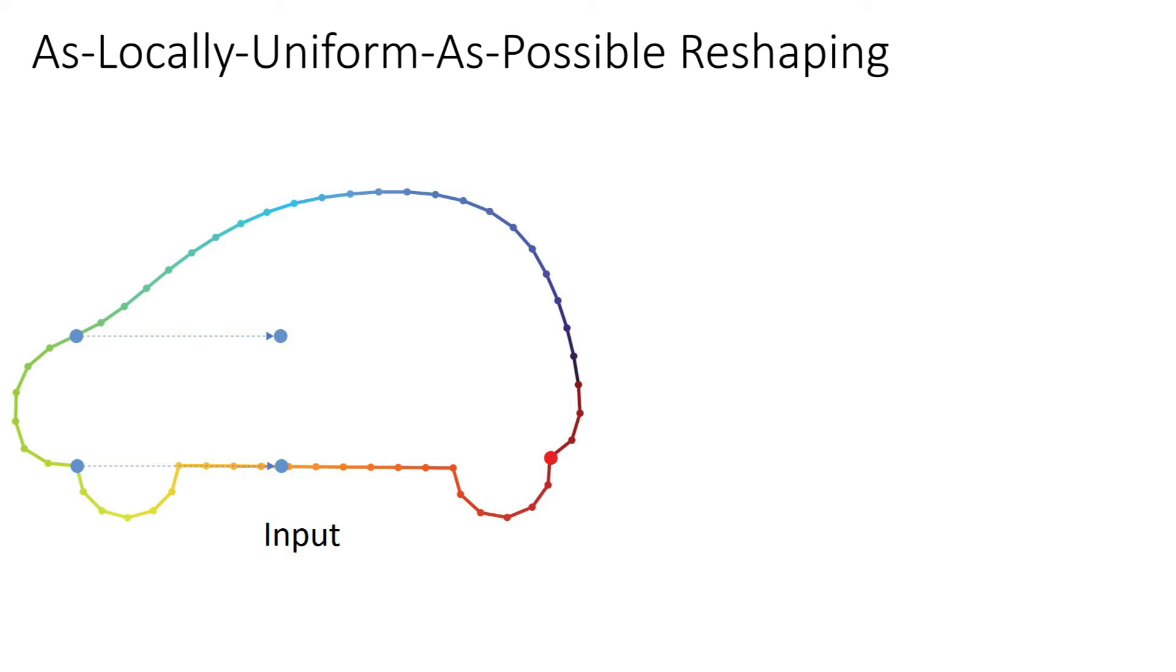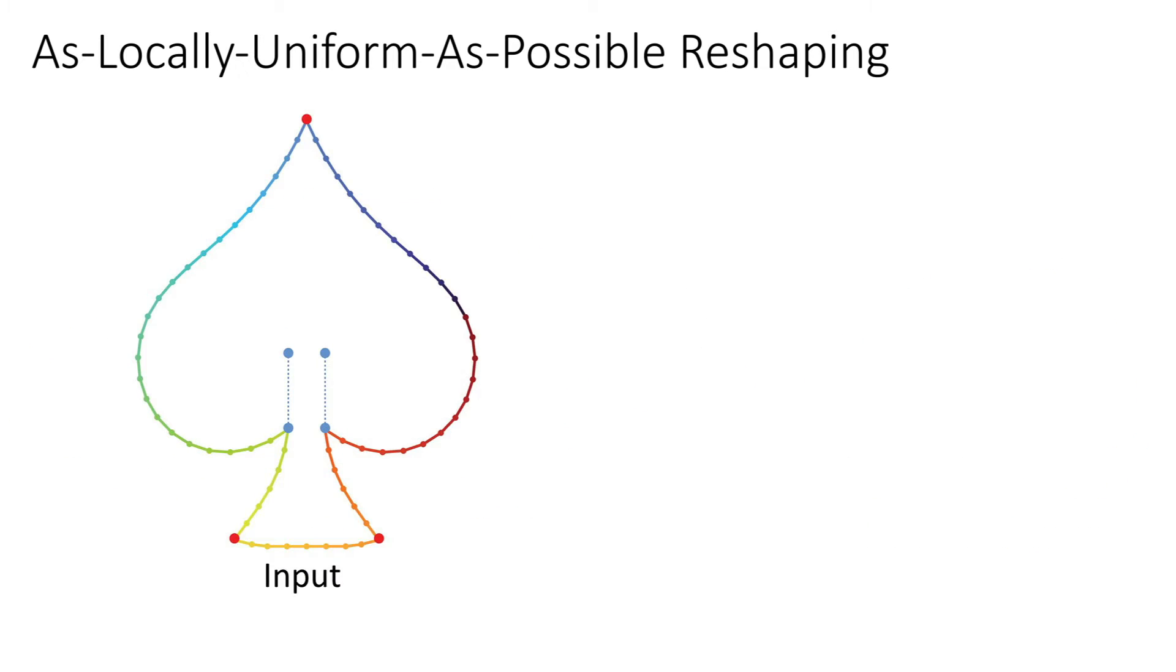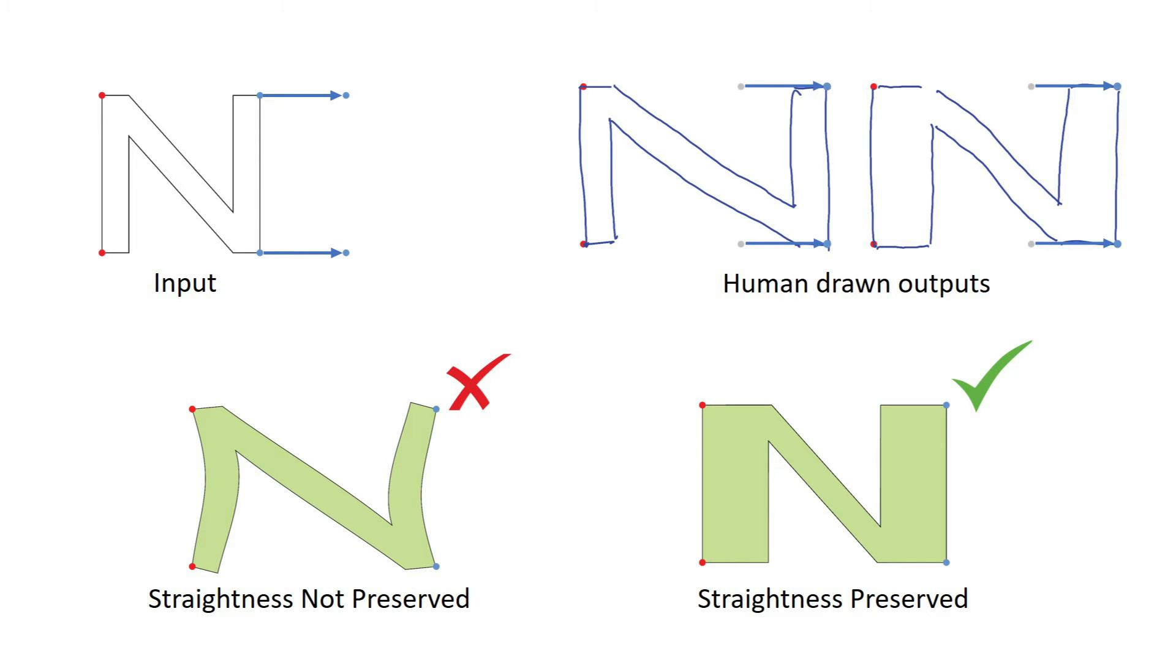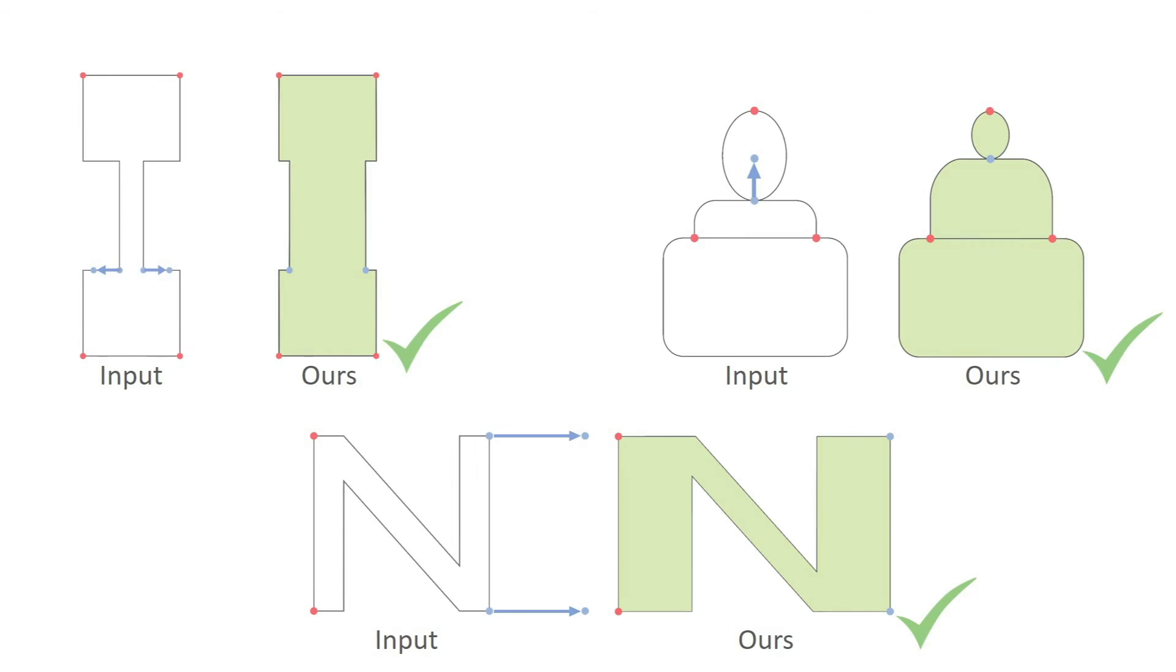We can formalize these user requirements as requiring the local gradient of the mapping from the original to the reshaped curves to be as close as possible to a uniform scale. We call this an as locally uniform as possible reshaping, or ALUP reshaping for short. Artists also expect straight lines to be strictly preserved, even when doing so results in increased rotation across the board. Our as locally uniform as possible reshaping method is designed to satisfy these properties.